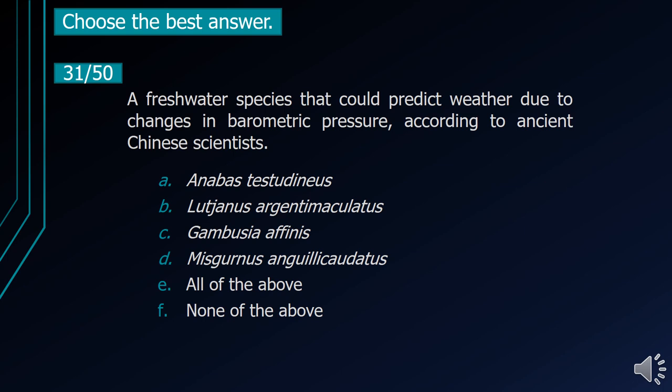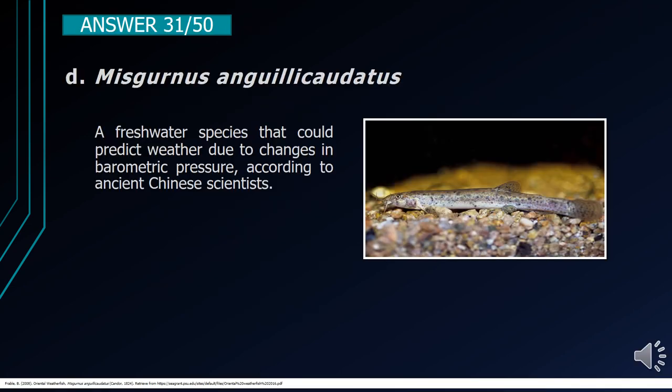Number 31. A freshwater species that could predict weather due to changes in barometric pressure, according to ancient Chinese scientists. A. Anabas testudineus. B. Lutjanus argentimaculatus. C. Gambusia affinis. D. Misgurnus anguillicaudatus. E. All of the above. F. None of the above. The correct answer is letter D, Misgurnus anguillicaudatus, which could predict weather due to changes in barometric pressure according to ancient Chinese scientists.